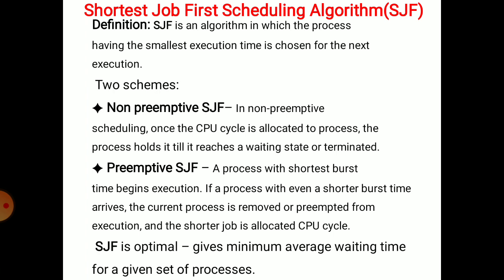The second method is Preemptive SJF. A process with the shortest burst time begins execution. If a process with an even shorter burst time arrives, the current process is removed or preempted from execution, and the shorter job is allocated the CPU cycles.